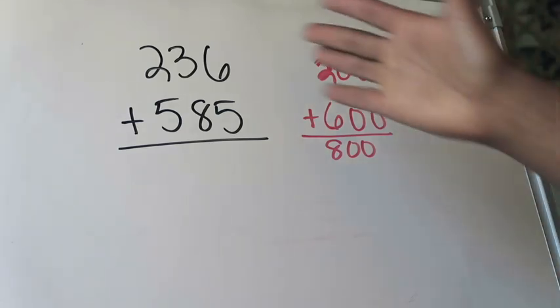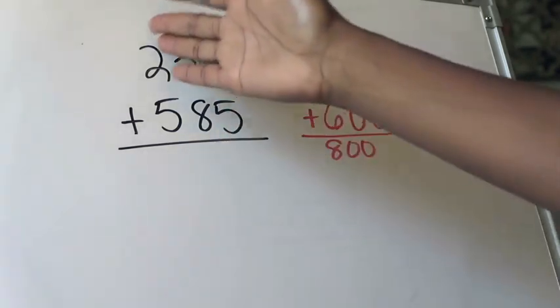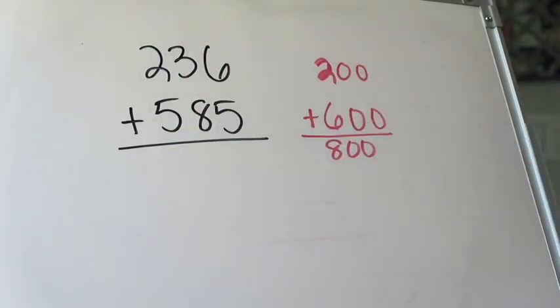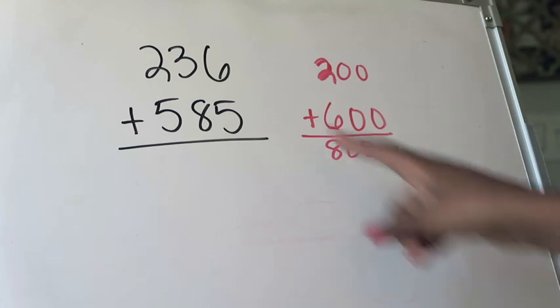What I need to remember when I'm adding numbers using the place value strategy is that in any place value position I cannot end up with more than 10. If I have more than 10, I need to regroup, and regrouping means I'm going to carry that extra bit that I have to the next place value position.